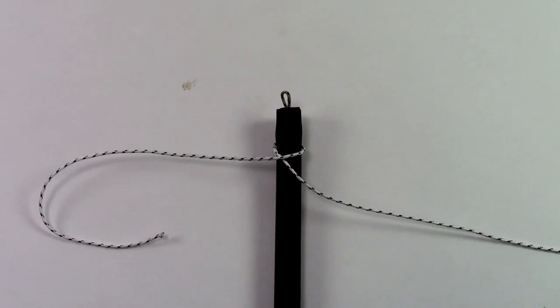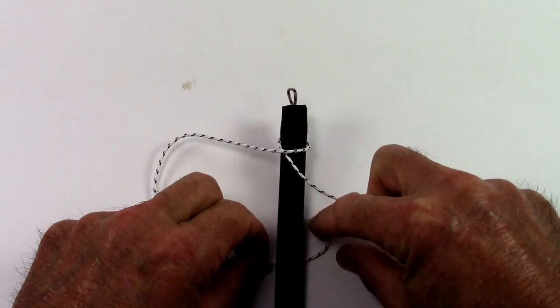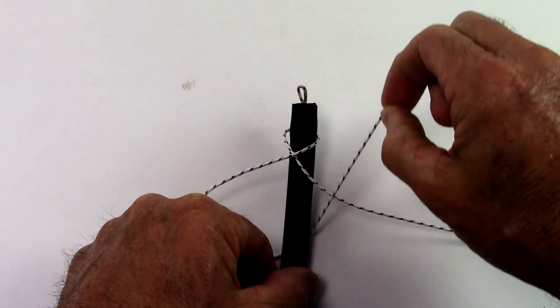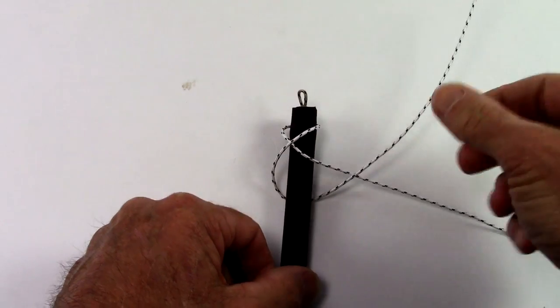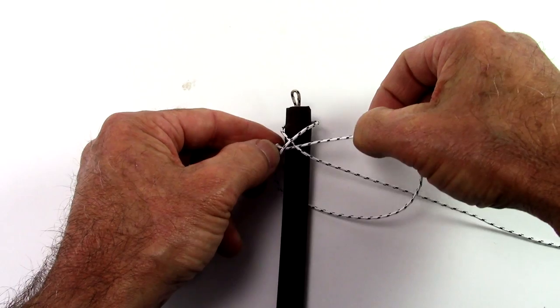To keep the loop from slipping out of the band, you will need another piece of 1.5 millimeter Dyneema cord. Take this cord and tie it around the band using a constrictor knot. Make sure you tie this knot above the knot in the loop.